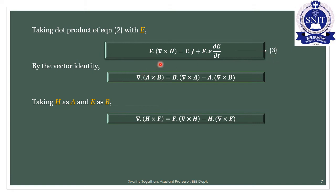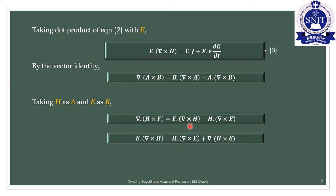Equation number 3 is: E · (del cross H) = H · (del cross E) + del · (H cross E). When we apply the vector identity, substituting H and E, we get equation number 4.